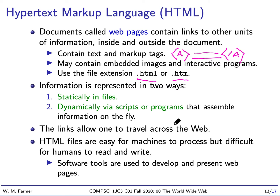For instance, when you request a report on the weather, you request a certain page, and what you get back will be that page filled in with current weather information. These links allow you to basically travel across the web — you can hop from machine to machine, gathering up information. HTML files, if you've ever looked at them, are difficult for humans to read and write, but they're very easy for machines to process. There's a whole slew of software tools that are used to develop and present webpages. That's HTML.